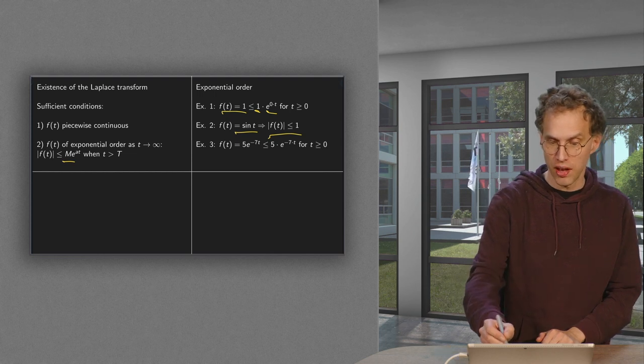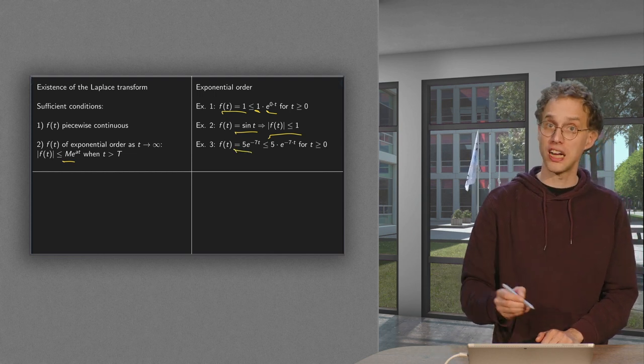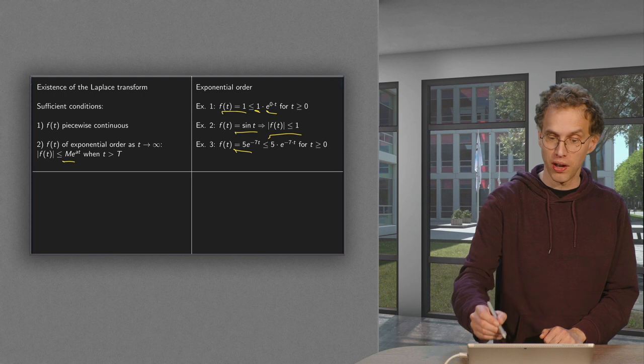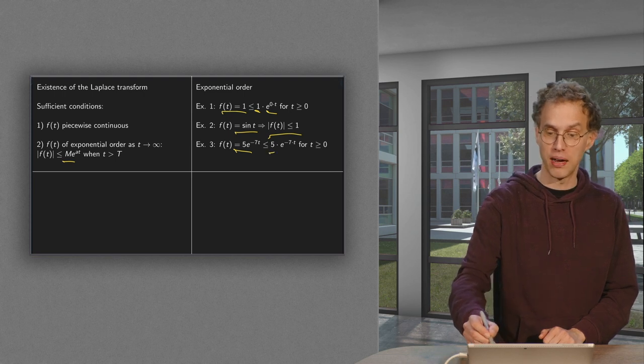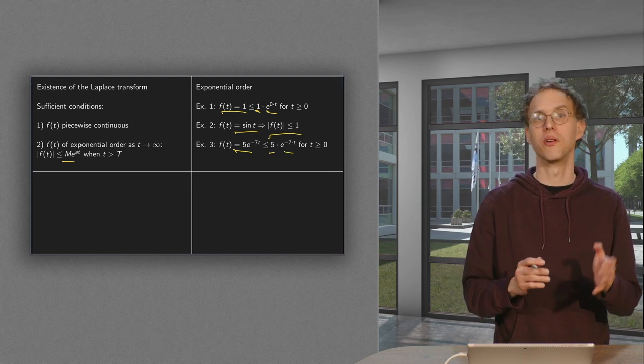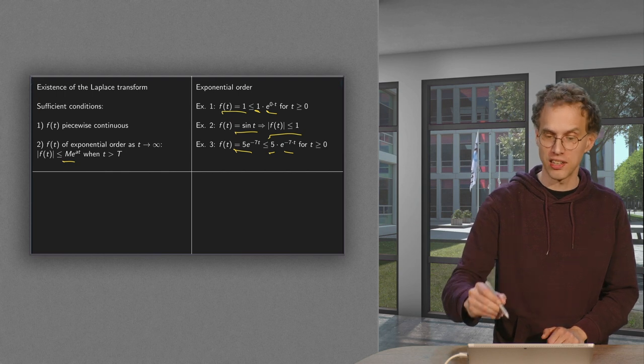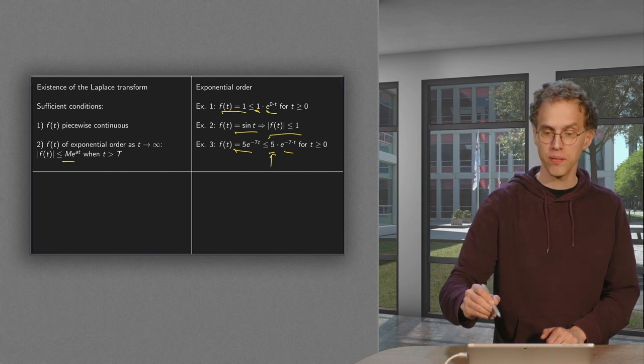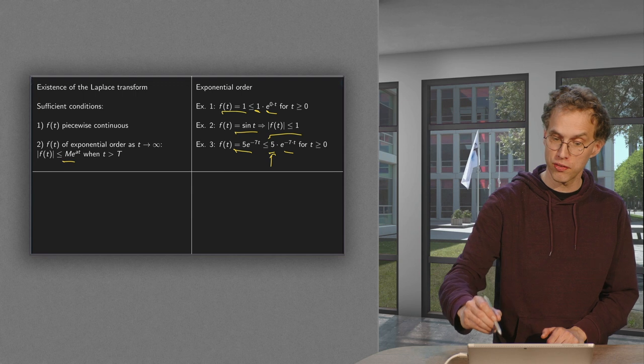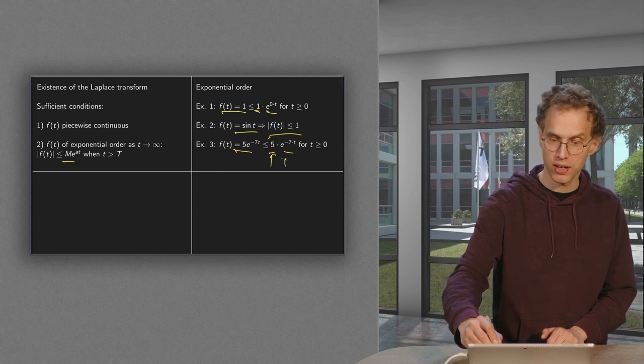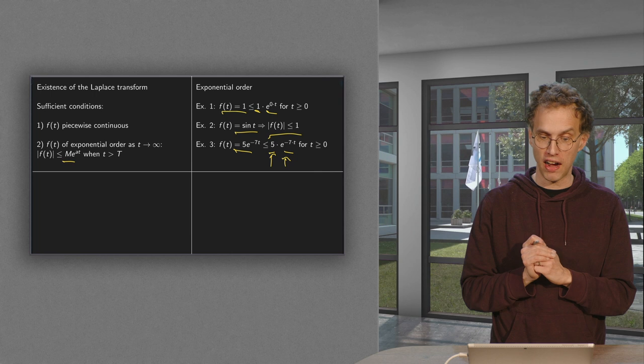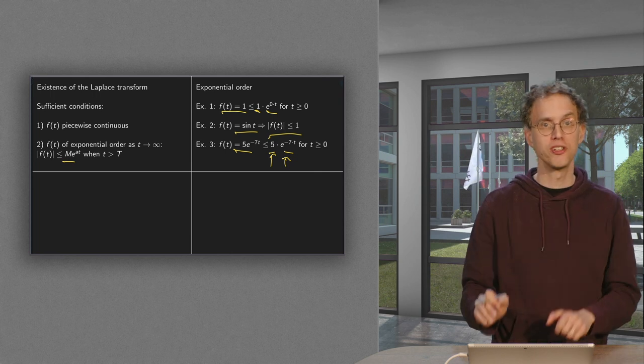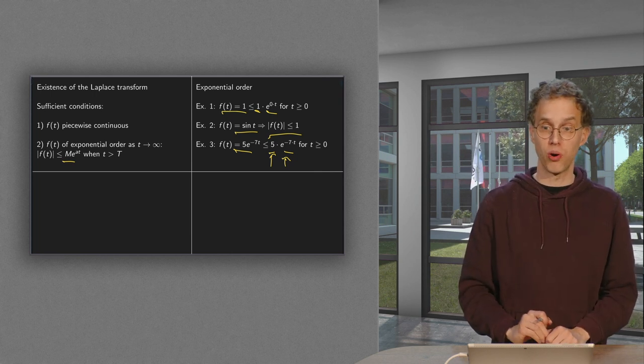Next example, 5 times e to the power minus 7t. What about this one? Well, that's smaller or equal than 5 times e to the power minus 7t. Okay, that's a bit silly to write it like this. But now your M is over here. You can pick your capital M equals 5. And you can pick your a even minus 7 and you are fine. So all those functions are of exponential order.